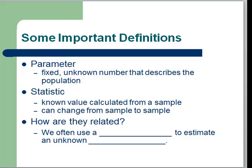We need to make a distinction between a parameter and a statistic. Now in an earlier lesson, we learned that a parameter is a number that describes a population. We're going to get a little more detailed and say now that a parameter is a fixed number.